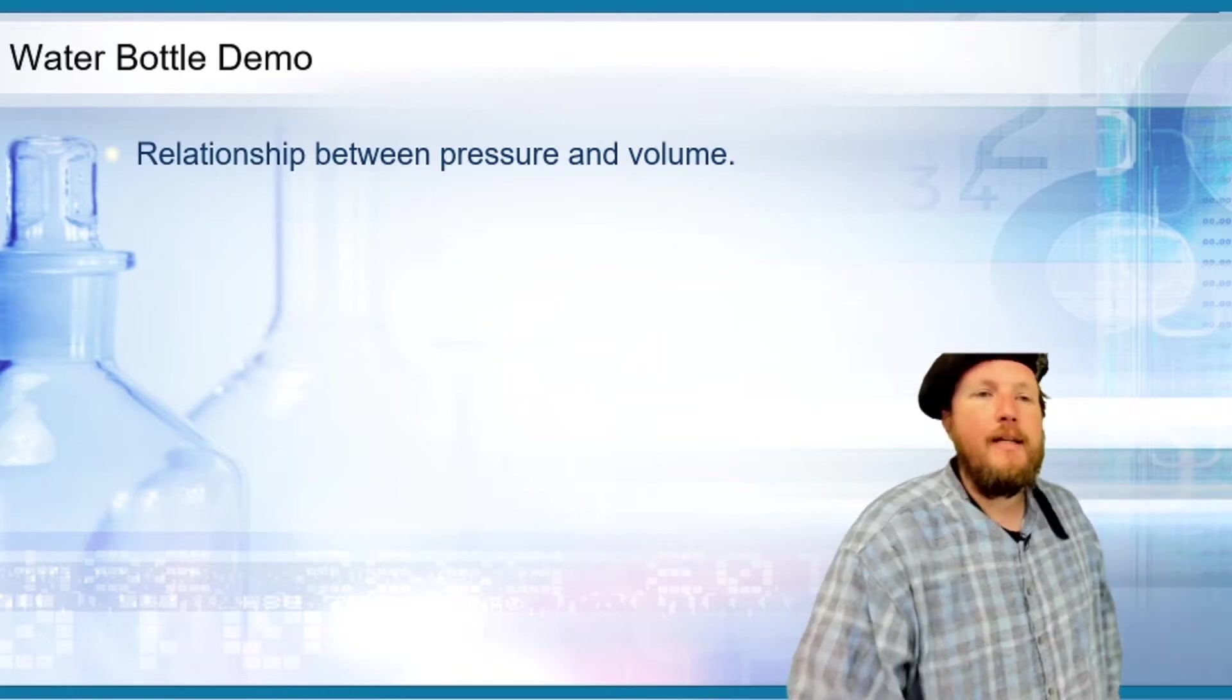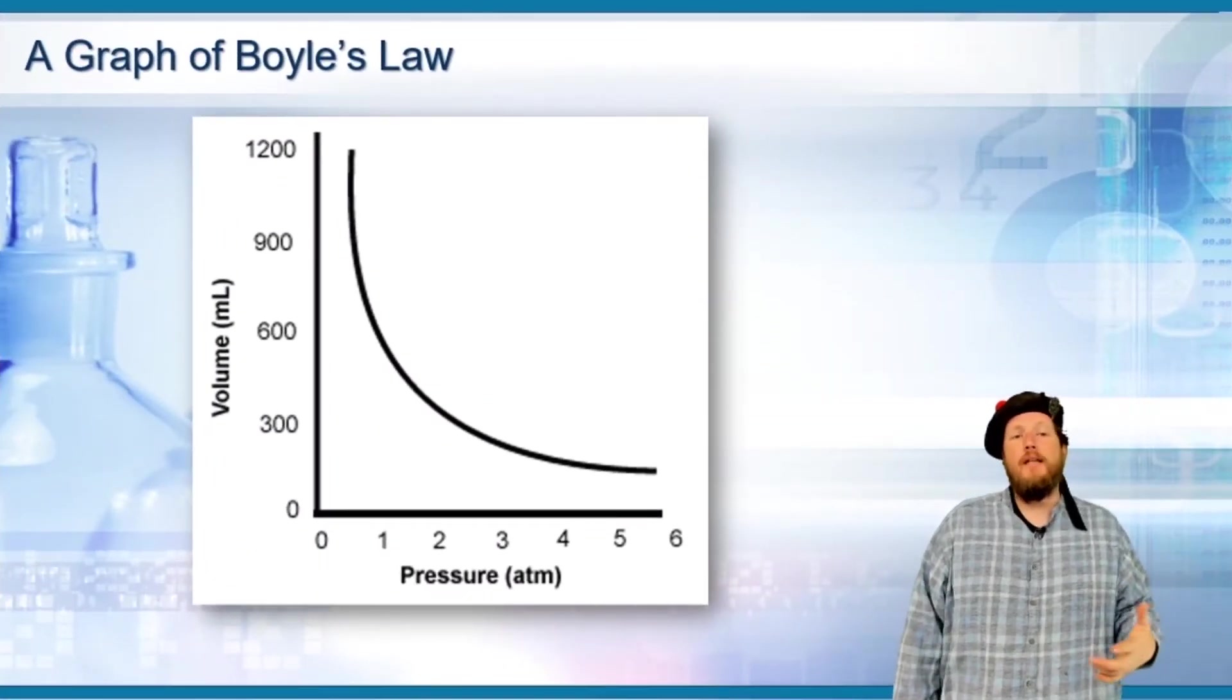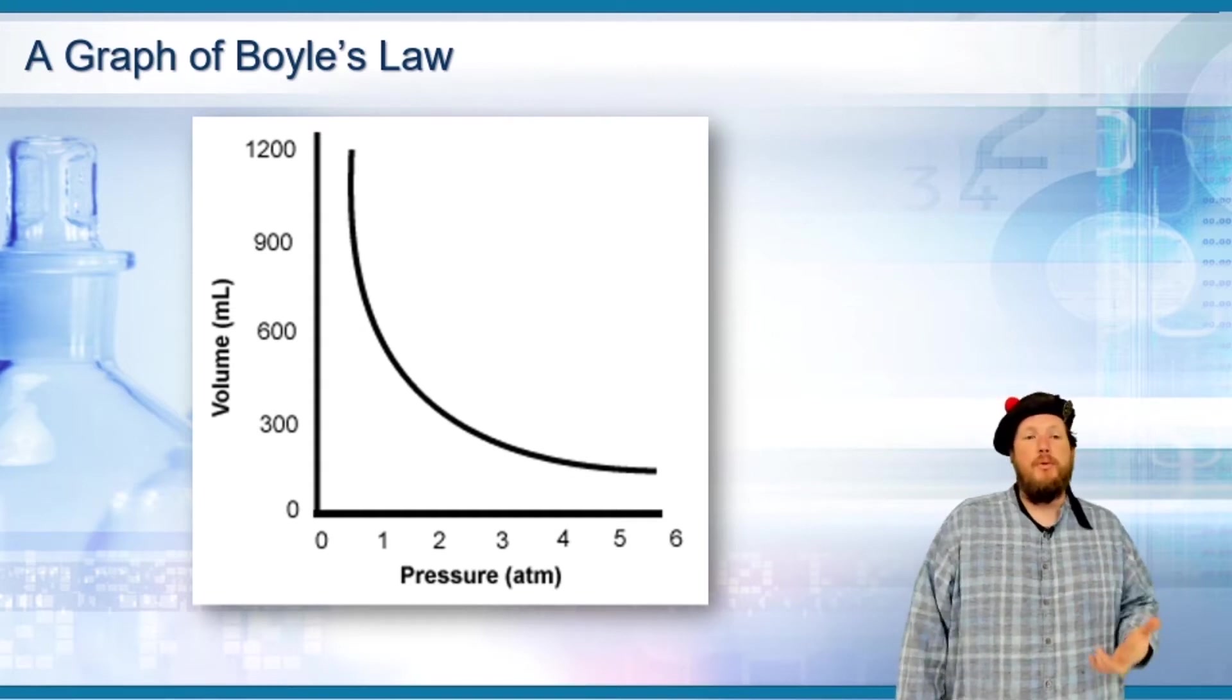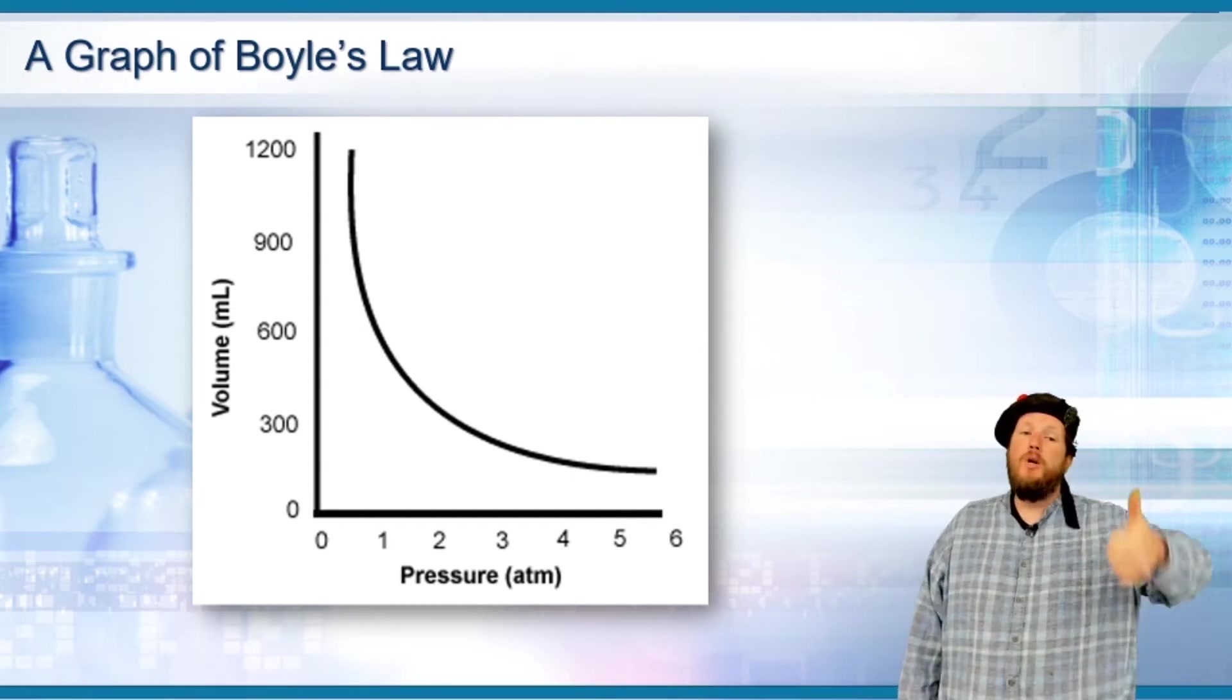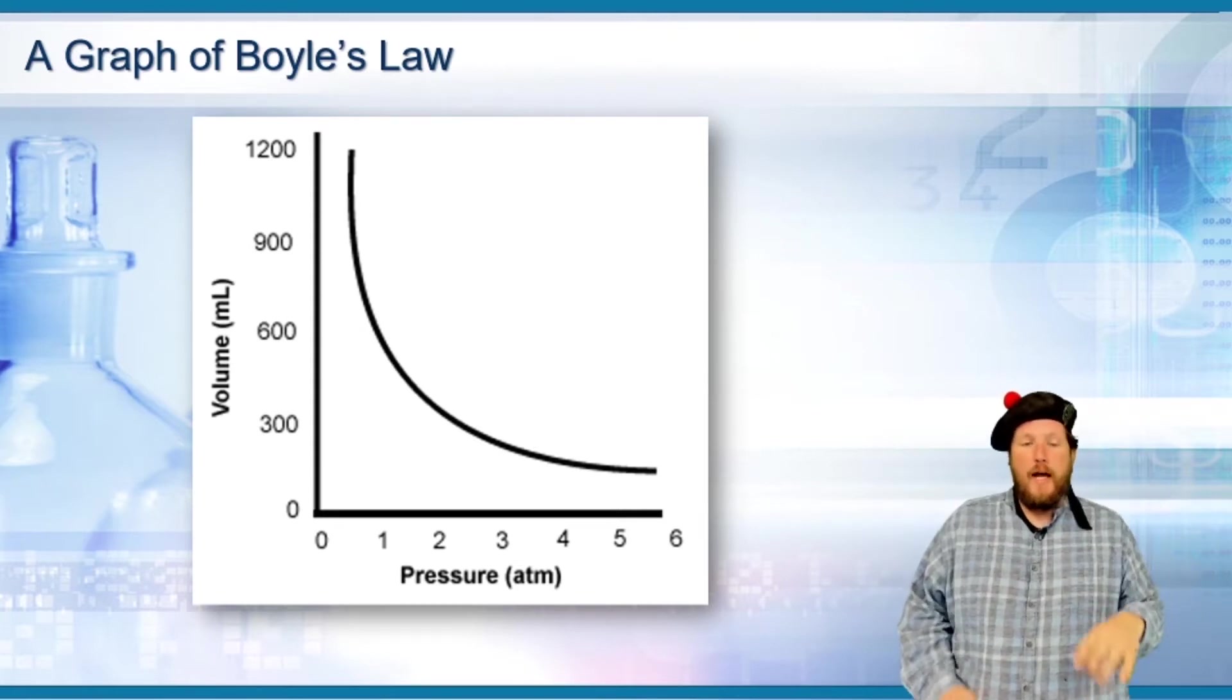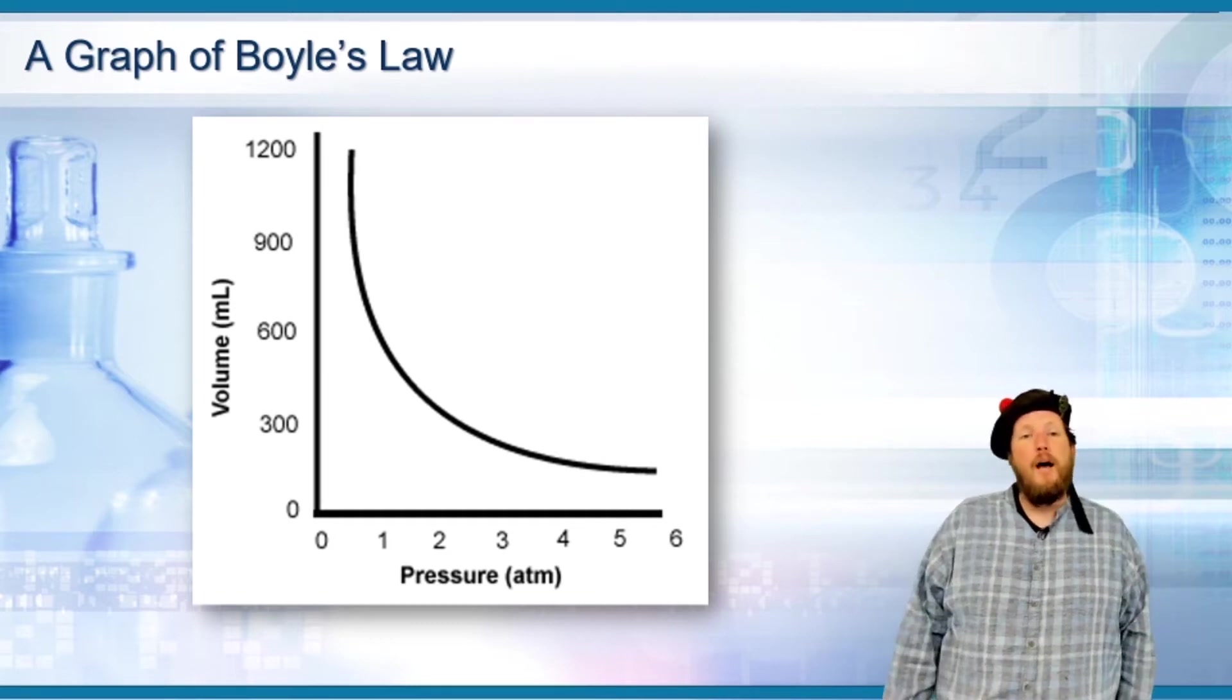This is expressed by Boyle's law. Boyle's law says that volume and pressure are inversely proportional. As volume goes up, pressure goes down. As pressure goes up, volume goes down, or as we shrink the volume on that bottle, the pressure inside of it goes up.